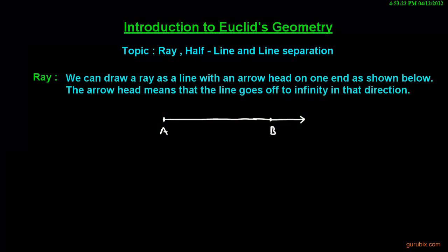Welcome friends, in this video we shall learn about ray, half line, and line separation. So let us start with ray. We can draw a ray as a line with an arrow head on one end as shown below. This is the figure of ray. The arrow head means that the line goes off to infinity in that direction.